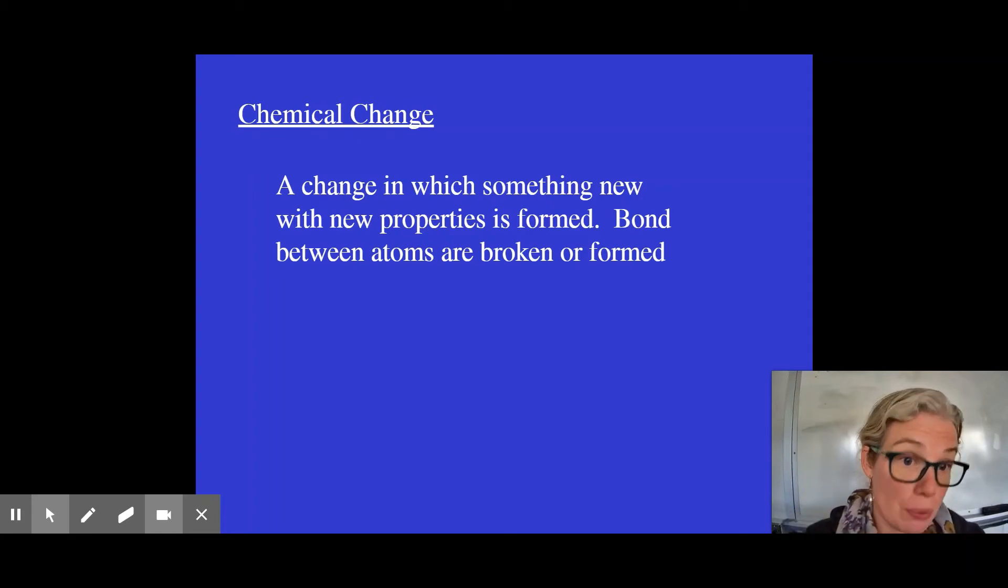So something new with new properties has actually been formed and if you were able to look at the atoms in the paper, the way the atoms were bonded together will have changed during a chemical change. Another word for a chemical change is a chemical reaction.